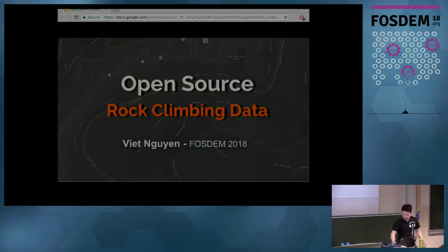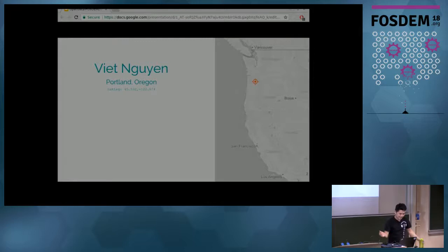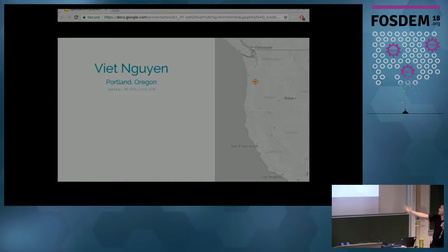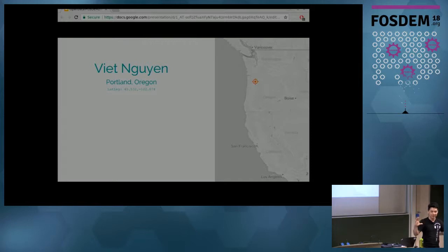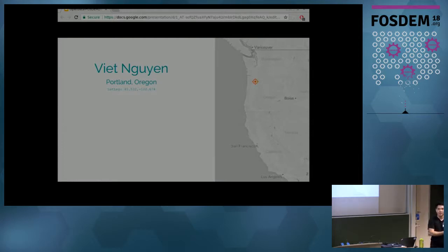I'm from Portland, Oregon. I've been climbing for about six or seven years and five years in the open source space. About a year ago I looked into OpenStreetMap — I wanted to make a map of all the climbs in the USA, but to my surprise there's very little data in OpenStreetMap when it comes to rock climbing.